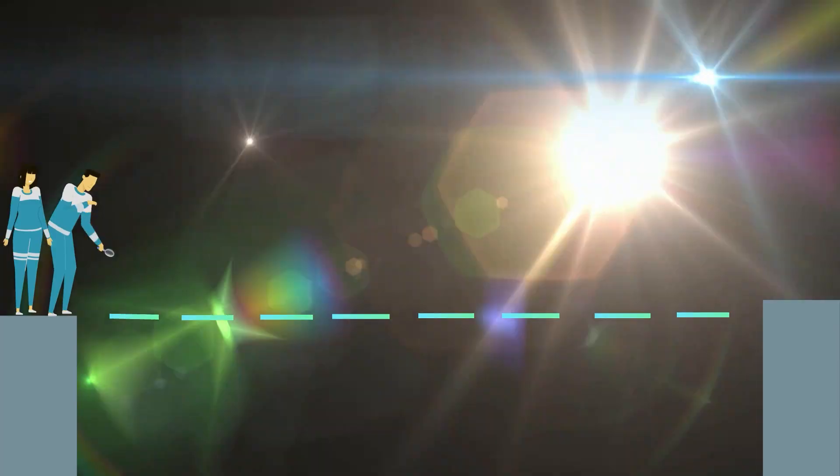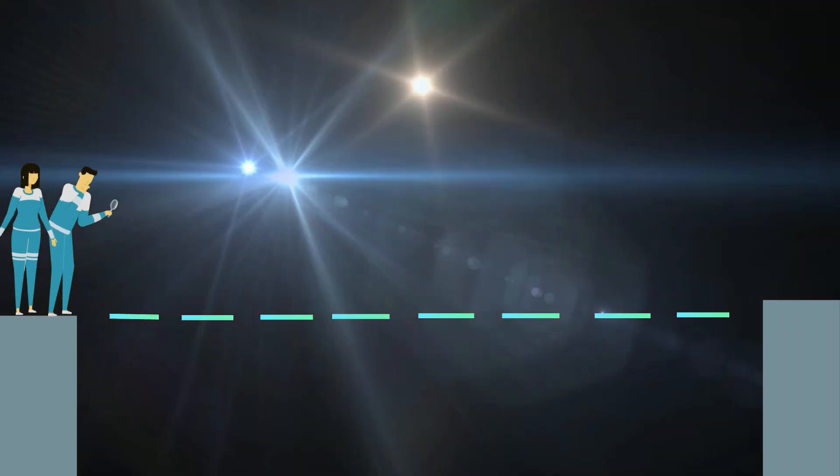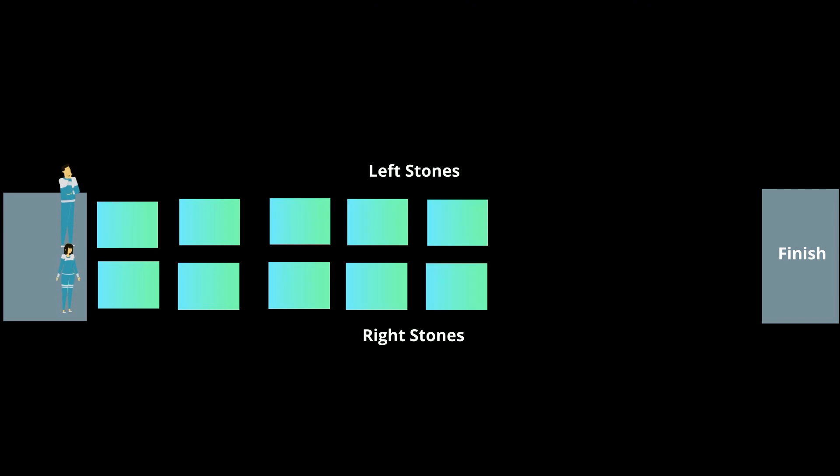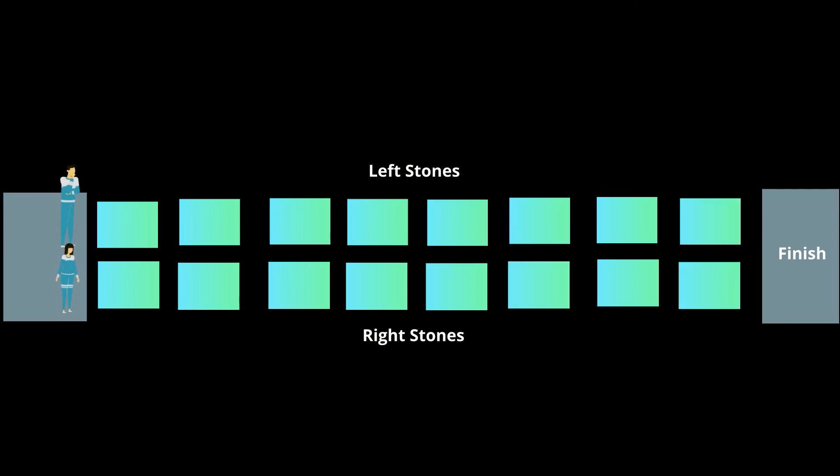First, define the objective. What knowledge, skills, and attitudes do you want your learners to achieve by completing the scenario? This will help you determine the content and structure. In the Squid Game example, the learner's objective is to cross the glass bridge by randomly choosing from two panes of glass.